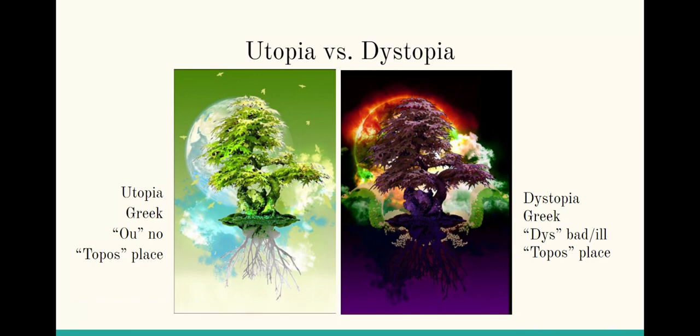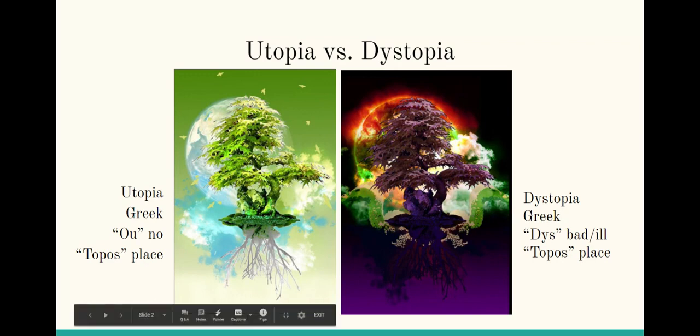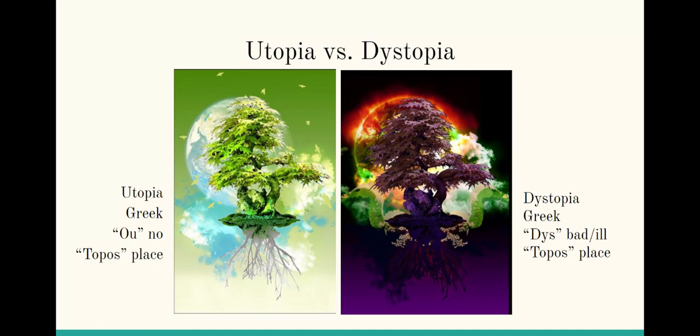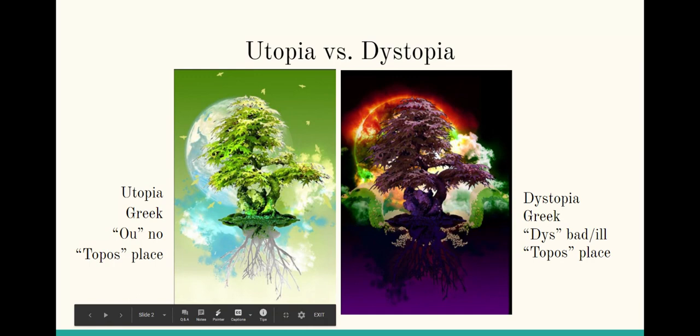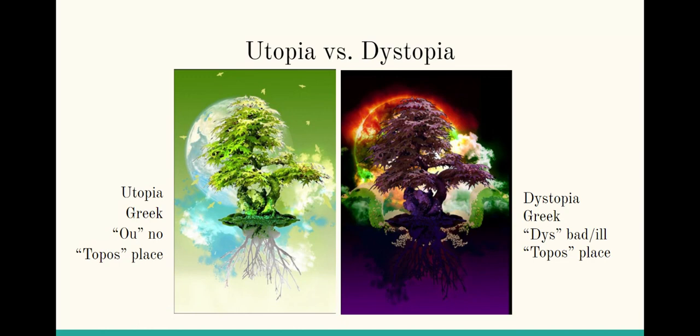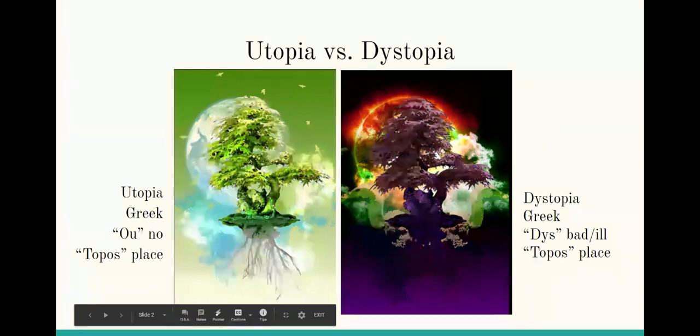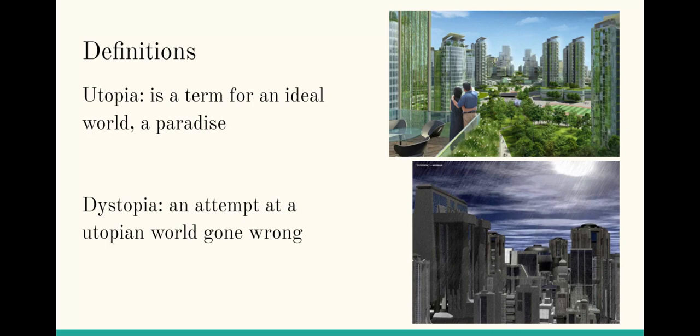Dystopian literature portrays negative aspects of society and in many cases causes us to look at issues in today's society that, if not taken care of, could end up much worse. It depicts a potential future if things weren't corrected or got much worse. So where utopia is the term for an ideal world or paradise, a dystopia is an attempt at a utopian world gone wrong in many cases.